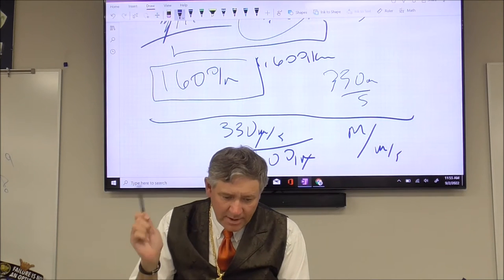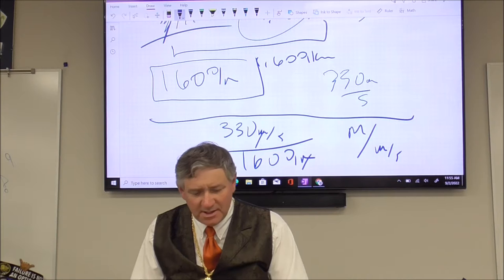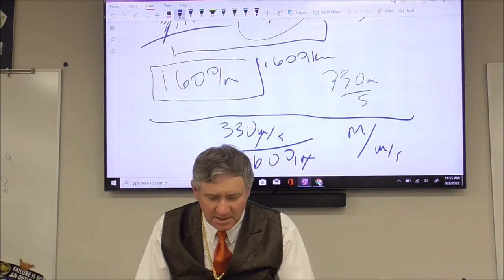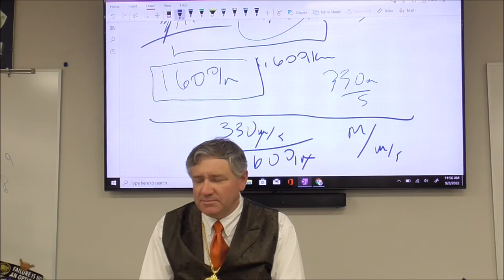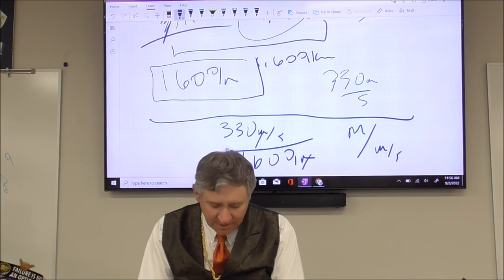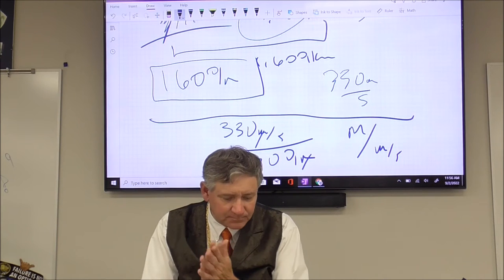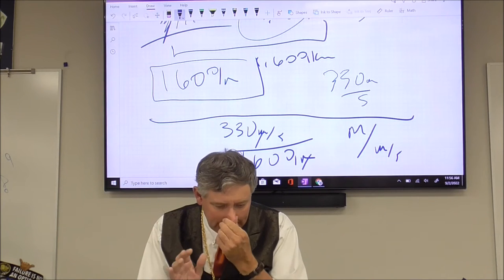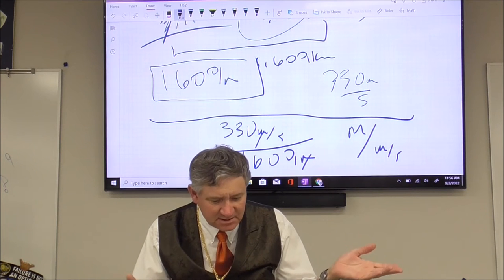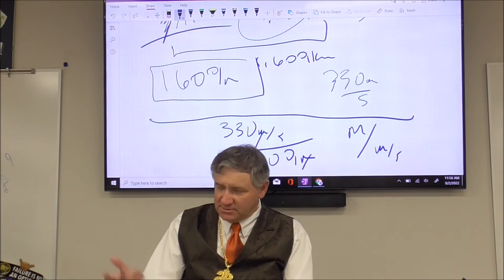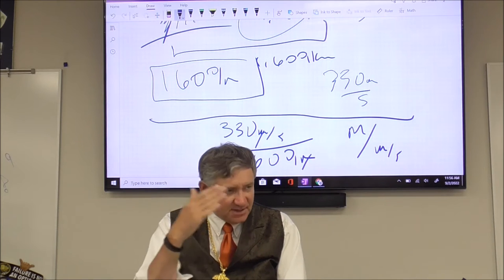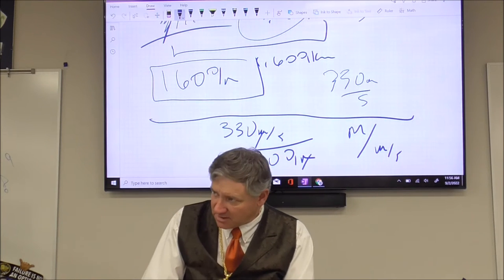Your answer to number ten should be around 5. Your answer to number eleven will make a horrible GPA. Make sure on number twelve — on that part where I asked, 'was the object ever at constant velocity, explain?' — the answer should be yes. But then tell me how you know that was a constant velocity.